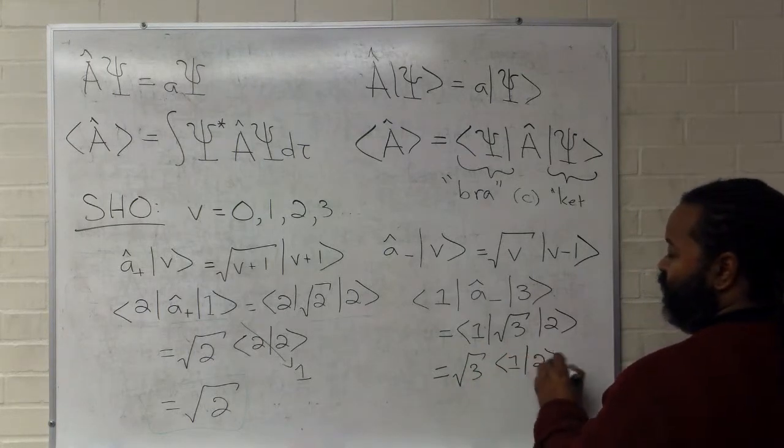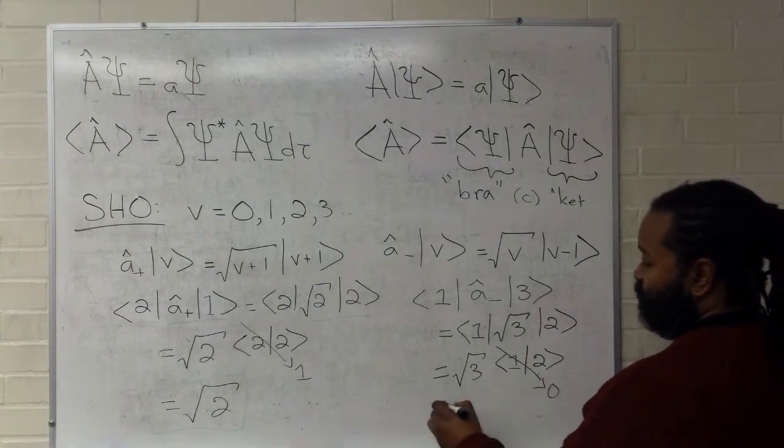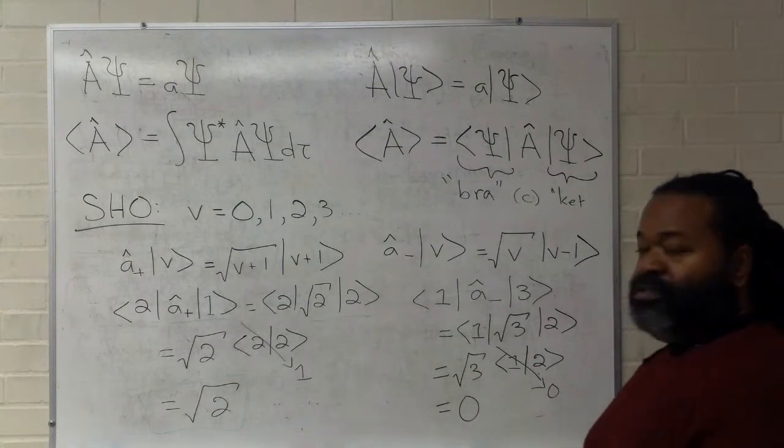And now, we have two indices that are different. Because this is orthonormal, that's zero, and the entire thing is zero.